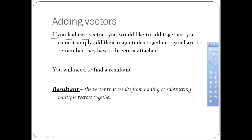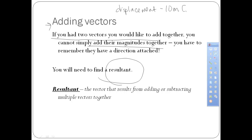When adding vectors together, you can't simply add their magnitudes — you have to remember that there's a direction attached to them. Whenever you add vectors together you have to find what's called the resultant. For example, let's say I have a displacement of 10 meters to the east, and then I go 20 meters west. I would draw a vector for my first displacement — 10 meters to the east.